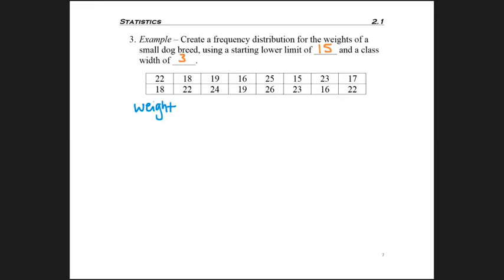because my first column should be the category I'm studying, and for the weights, I'm told to start with a lower limit of 15, and for the class width, remember that we add the 3 to get the next lower limit,